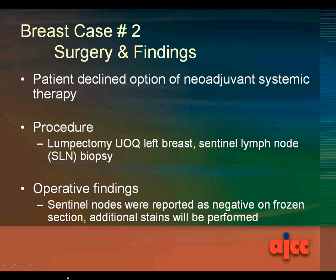Now let's look at the surgery and findings. The patient declined the option of neoadjuvant systemic therapy. The procedure performed was a lumpectomy of the upper outer quadrant of the left breast with a sentinel lymph node biopsy. The operative findings were that sentinel nodes were reported as negative on frozen section, and additional stains would be performed.